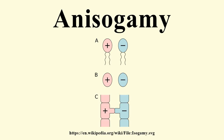Anisogamy refers to a form of sexual reproduction involving the union or fusion of two dissimilar gametes, also termed anisogamous or anisogamic. The smaller gamete is considered to be male, whereas the larger gamete is regarded as female.